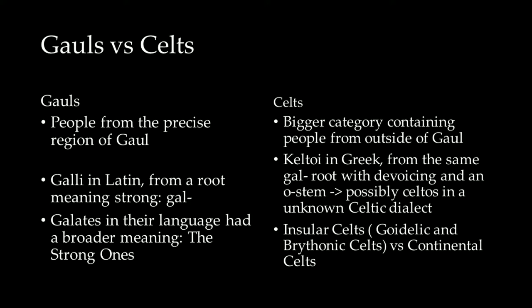The Celts are a bigger category; it contains all the people from outside of Gaul. This English word comes from Keltoi in ancient Greek. From the same Gaul root, it is possible that the K and the O stem come from an unknown Celtic dialect, or perhaps it is only due to the Greek influence on the word. The biggest divide inside this broader group of Celts is the one of the insular Celts versus the continental Celts. Today, only what we consider as insular Celts remain.